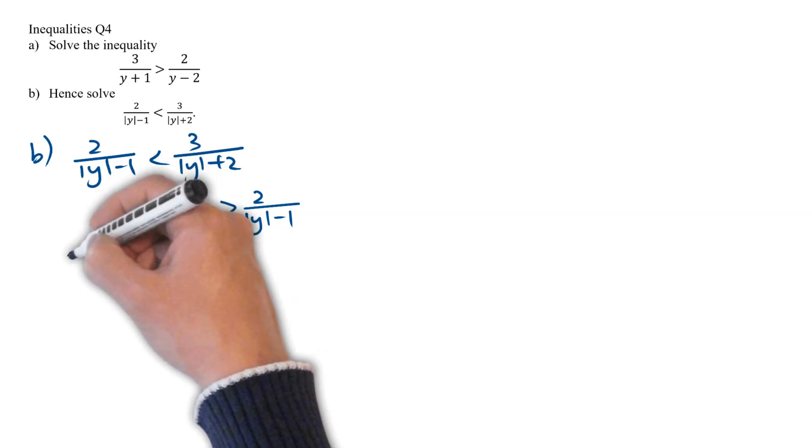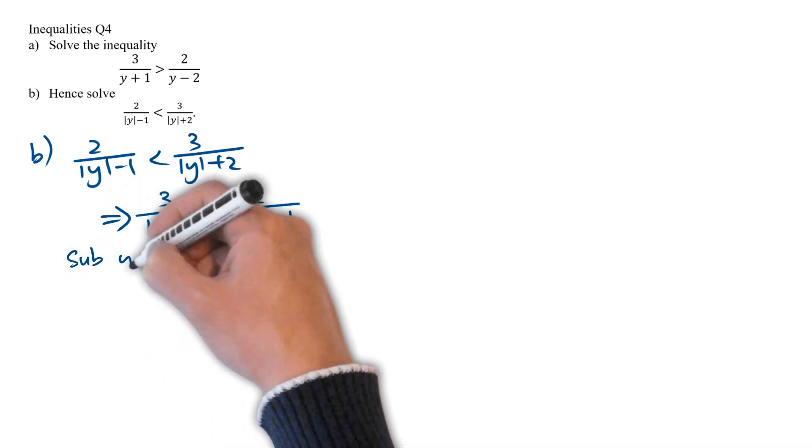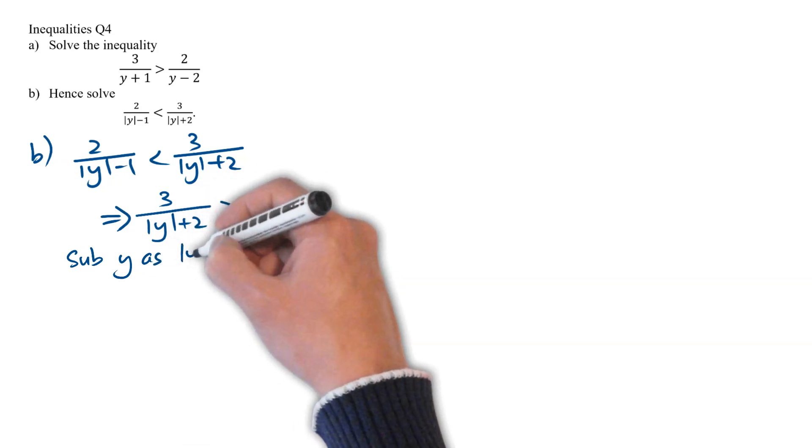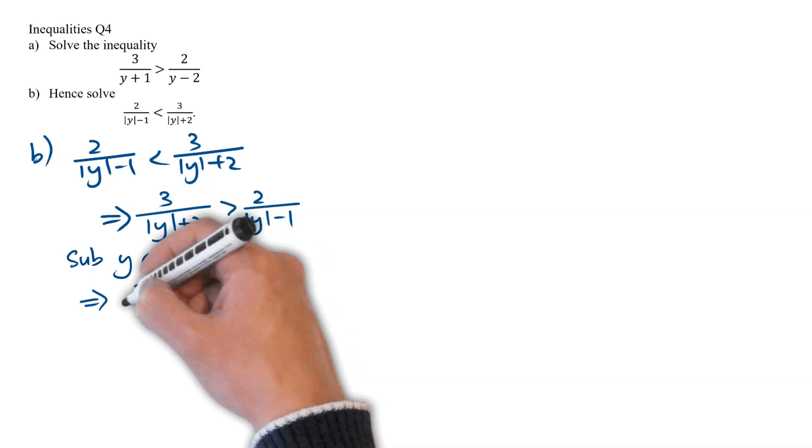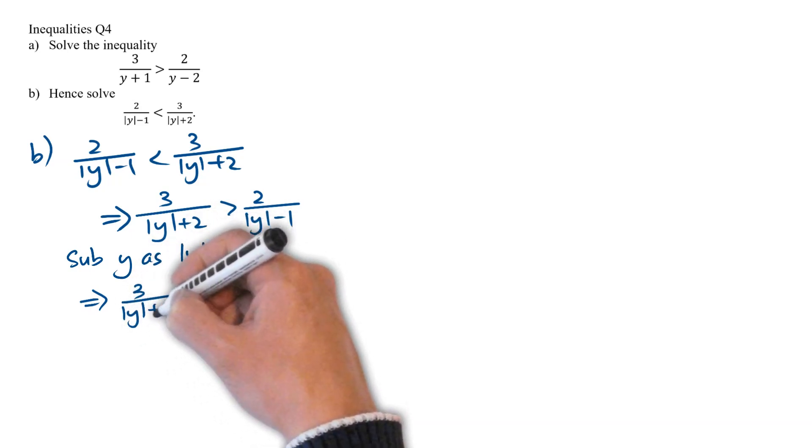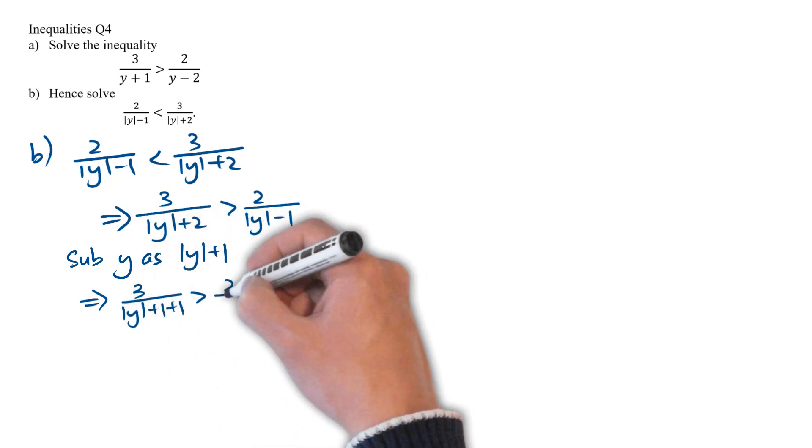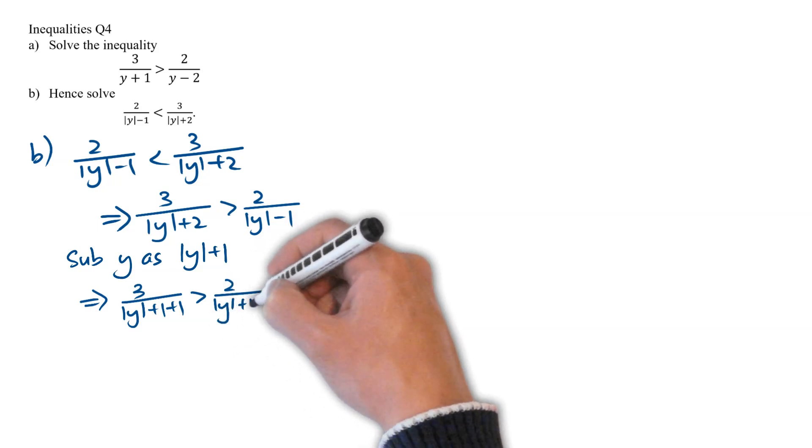By observing, we can make a substitution of y as mod y plus 1. Now, let's make this substitution into our original inequality, and we will get 3 over mod y plus 1 plus 1, greater than 2 over mod y plus 1, minus 2.